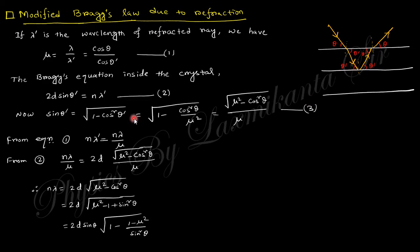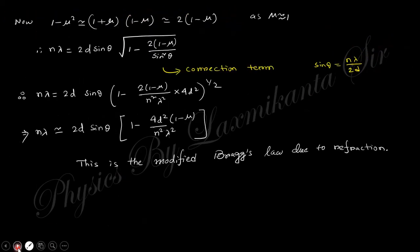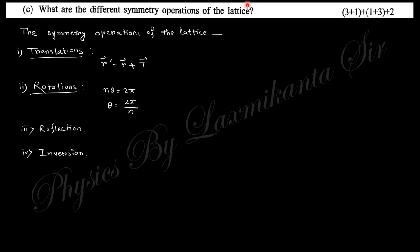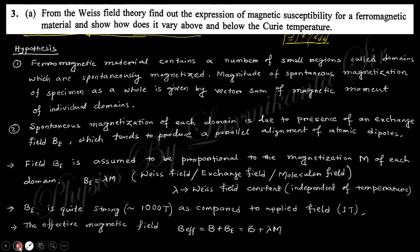Next thing is what are the different symmetry properties of a lattice. There are many more symmetry properties like translational symmetry, rotational symmetry, reflectional symmetry, and inversion symmetry. Next question says from the Weiss field theory, find the expression of magnetic susceptibility for ferromagnetic material.